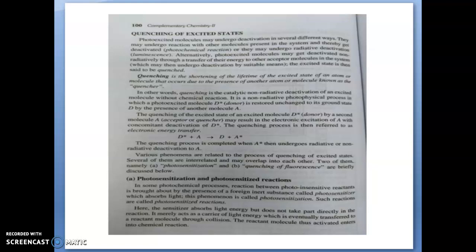The electronic energy transfer is represented as: D* + A → D + A*. This quenching process is completed when A* then undergoes radiative or non-radiative deactivation back to A. Sometimes the A* molecule will undergo a chemical reaction, and sometimes it will get deactivated — both can happen, depending upon the molecule.